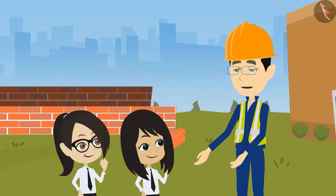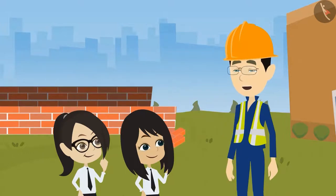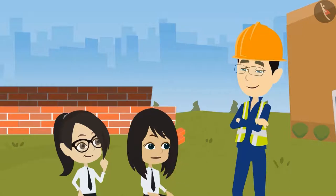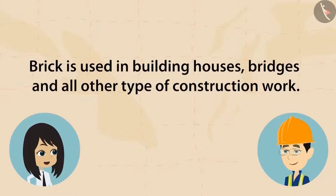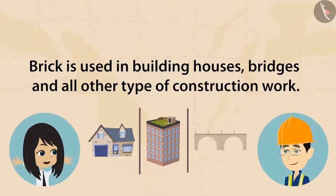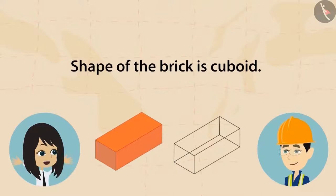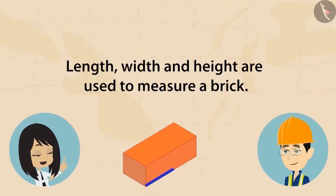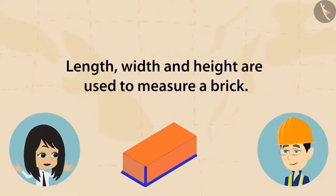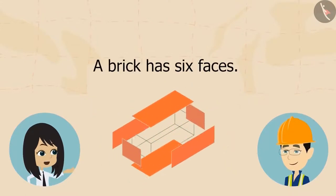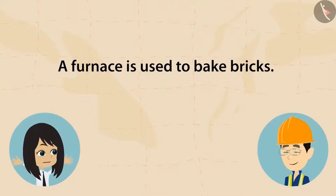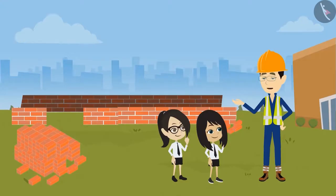Before showing the bricks, the engineer asks the students to recall what was covered last time. A student recaps: a brick is a small rectangular box made by baking clay, used in building houses, bridges, and other constructions. Its shape is cuboid. Length, width, and height are used to measure a brick. A brick has 12 edges and 6 faces. A furnace is used to bake bricks. The engineer confirms they remember everything.